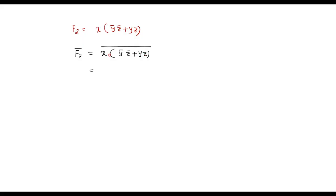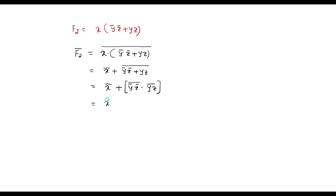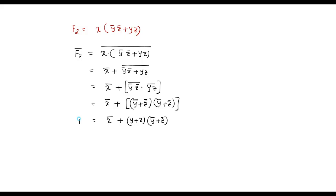Applying De Morgan's theorem, since f2 is x dot (ȳz̄ plus yz), I can write f2 bar as x̄ plus (ȳz̄ plus yz) bar. Further applying De Morgan's theorem to the second term: (ȳz̄) bar dot (yz) bar. Simplifying each: ȳ bar plus z̄ bar gives y plus z, and ȳ plus z̄ from the second. So f2 bar equals x̄ plus (y plus z)(ȳ plus z̄).